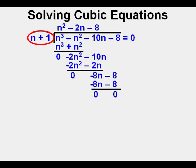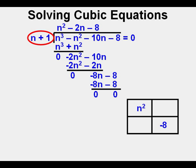So we've successfully factored out quantity n plus 1 and have the trinomial n squared minus 2n minus 8 left to work with.